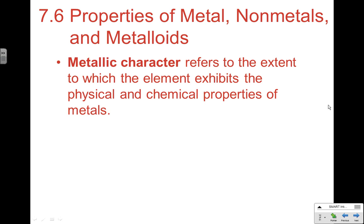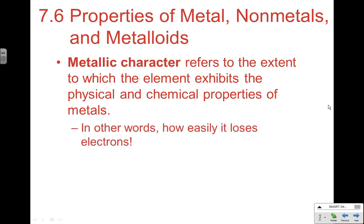We'll look at the last three sections. Section 7-6 gets into properties of metals, nonmetals, and metalloids. In order to understand the differences between these, we need to talk about metallic character. Metallic character refers to the extent to which an element exhibits the physical and chemical properties of a metal — essentially, how easily it loses electrons.